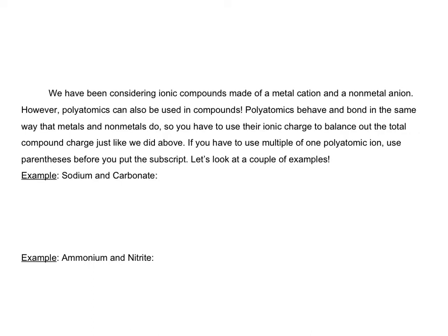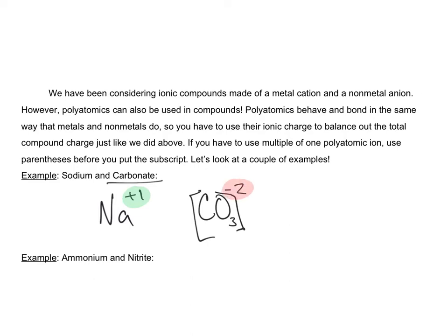Let's do an example with sodium and carbonate. Sodium has a charge of plus one — you can find that on your periodic table. Carbonate is a polyatomic ion found on your polyatomic ions list; it is CO3 and its charge is negative two. Remember, this means the charge for the whole polyatomic ion, so you don't have to multiply or distribute — you just leave it as is and use negative two as the charge. With one sodium and one carbonate, things are unbalanced because you only have plus one and negative two. To balance things out you need more positive, so you make it Na2. Using the crisscross method would also work: Na2 with one CO3, giving you Na2CO3 for sodium carbonate.